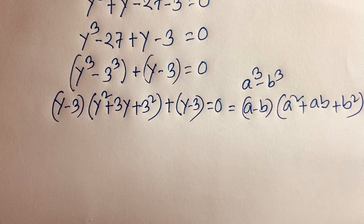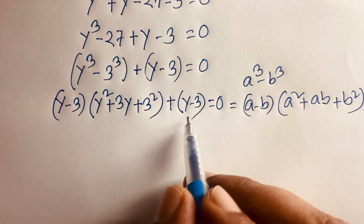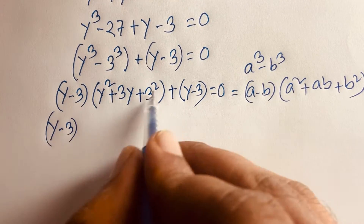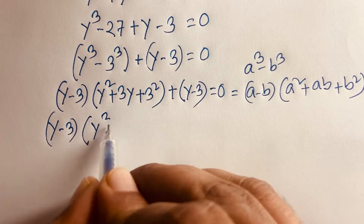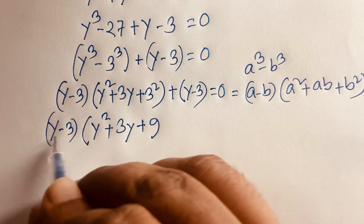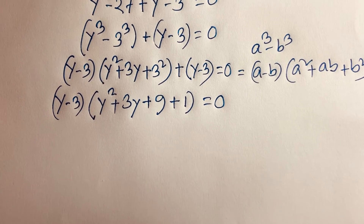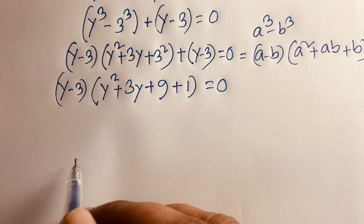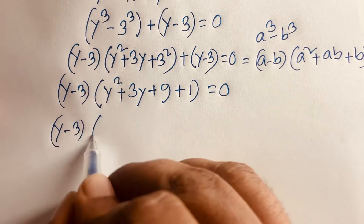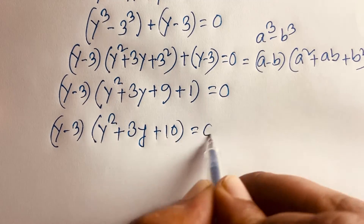We can see that (y − 3) is a common factor. Factoring it out: dividing the cubic part gives y² + 3y + 9, and dividing (y − 3) by itself gives 1. So we get (y − 3)(y² + 3y + 10) = 0.